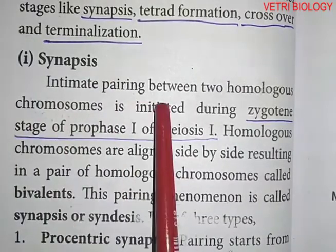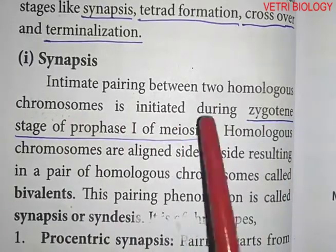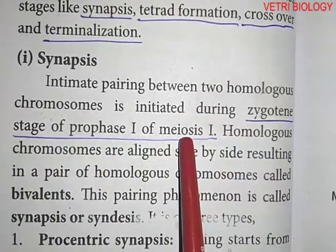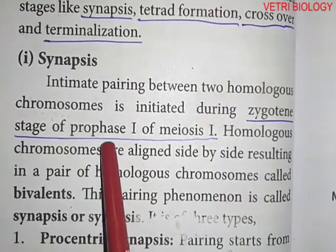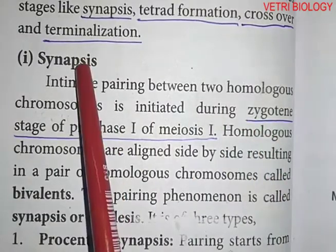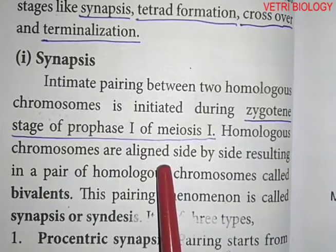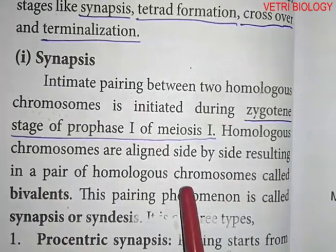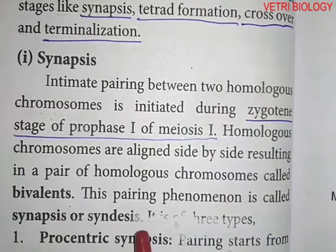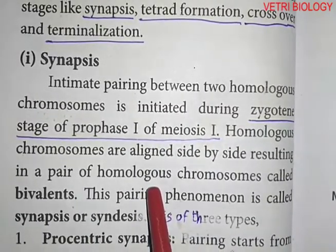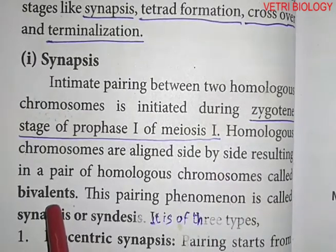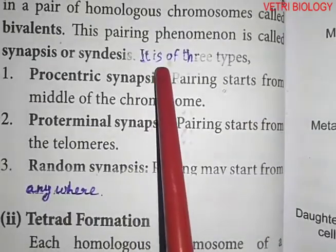Intimate pairing between two homologous chromosomes is initiated during the zygotene stage of prophase I of meiosis I. In prophase I there are five stages, and the second stage is the zygotene stage where synapsis takes place. Homologous chromosomes align side by side, resulting in a pair called bivalents. This pairing phenomenon is called synapsis.